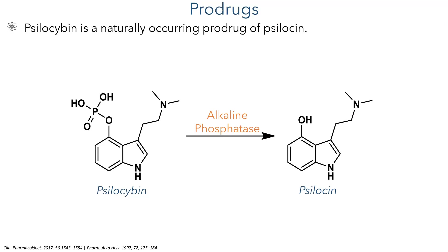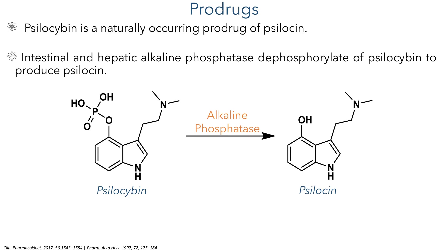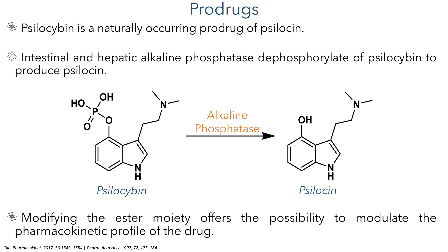In nature, psilocin is more typically found as psilocybin, which is a naturally occurring prodrug that has a phosphate group attached to the hydroxyl group. When ingested, this phosphate group is cleaved by alkaline phosphatase to produce the bioactive psilocin. This work aims to introduce different groups to this hydroxyl group and create a range of different prodrugs that can modulate the stability and pharmacokinetic profile of psilocin. This is quite an attractive strategy, and we've already seen this approach used before by the Ficini group, whose work we covered last year.